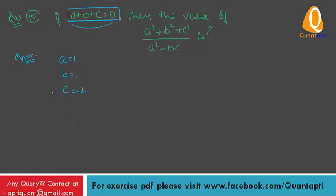You can cross-check this as well. a plus b plus c: value of a is 1, b is 1, and c is minus 2, so 1 plus 1 is 2, and 2 minus 2 is equal to 0. Verified.